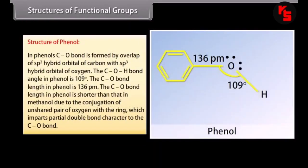In phenols, the C-O bond is formed by overlap of the sp2 hybrid orbital of carbon with the sp3 hybrid orbital of oxygen. The C-O-H bond angle in phenol is 109°. The C-O bond length in phenol is 136 picometers, which is shorter than that in methanol due to conjugation of the unshared pair of oxygen with the ring, imparting partial double bond character to the C-O bond.